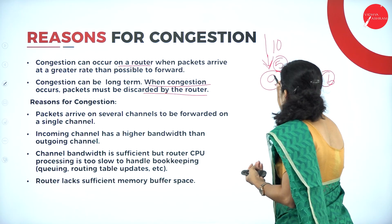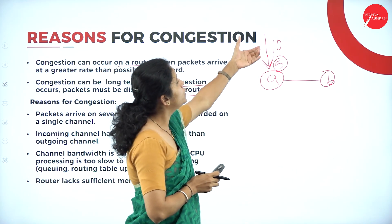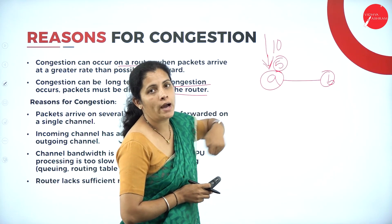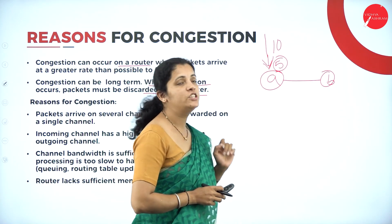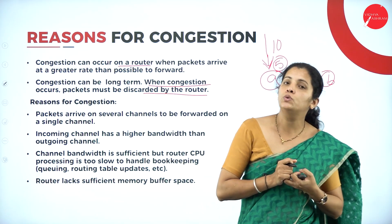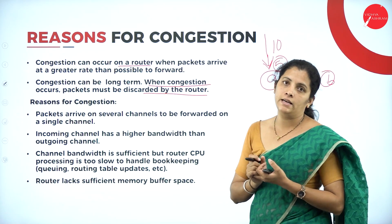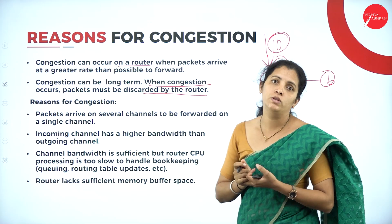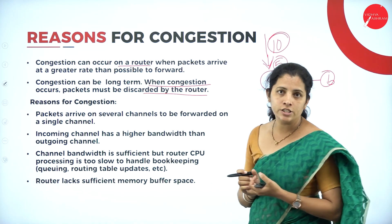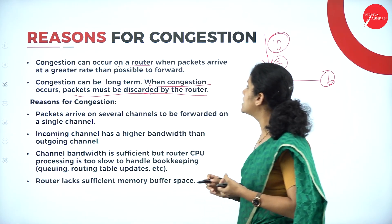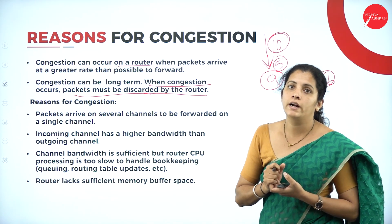The congestion can also be long term. Consider the example: router A is capable to hold only 5 packets at a time but it's going to receive 10 packets. In order to manage the congestion, router A is going to discard 5 packets out of 10. When congestion occurs, packets must be discarded by the router — the router is also responsible for discarding packets.